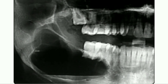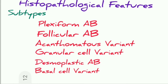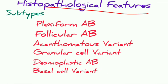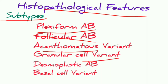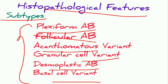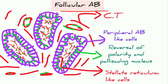This radiographic picture shows the radiolucent area of ameloblastoma of the jaw. According to histopathological findings, ameloblastoma is divided into six subtypes: plexiform, follicular, acanthomatous variant, granular cell variant, desmoplastic ameloblastoma, and basal cell variant.